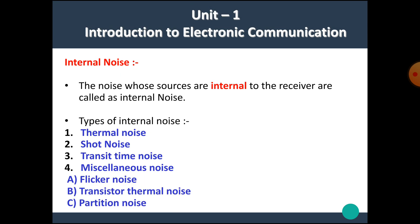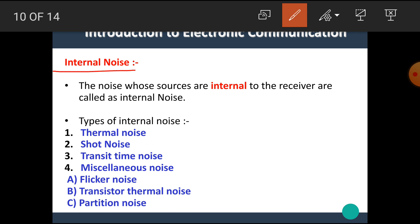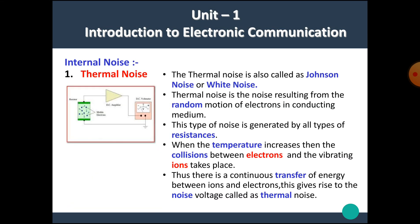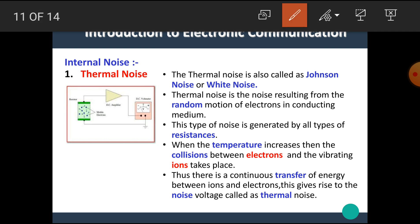Now let's see what is meant by internal noise. The noise whose sources are internal to the receiver are called internal noise. There are four types of internal noise: thermal noise, shot noise, transit time noise, and miscellaneous noise. Miscellaneous noise is further classified into flicker noise, transistor thermal noise, and partition noise.